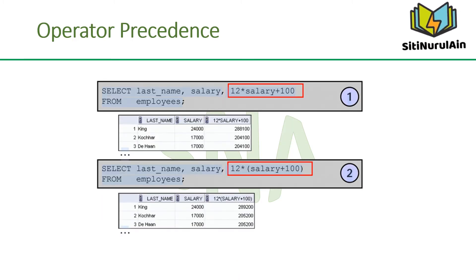The first example in the slide displays the last name, salary, and annual compensation of employees. It calculates the annual compensation by multiplying the monthly salary by 12, plus a one-time bonus of $100. Note that multiplication is performed before addition. You can use parentheses to reinforce the standard order of precedence and to improve clarity. For example, the expression can be written as 12 * salary + 100 with no change in the result.